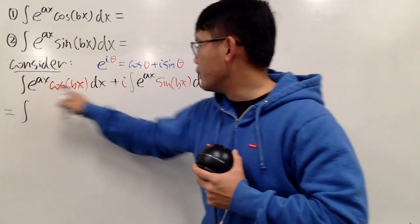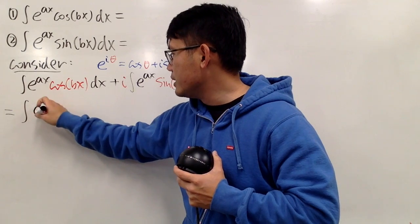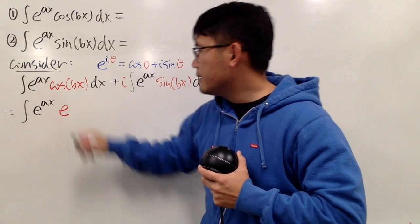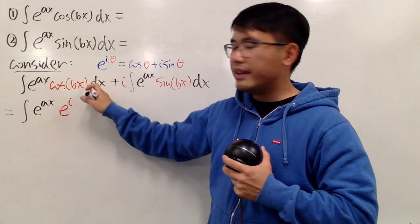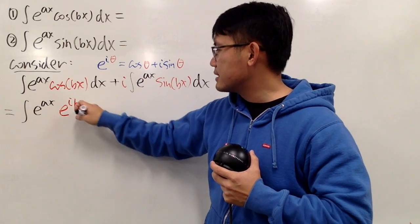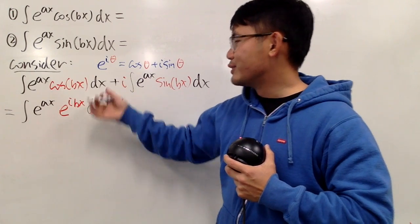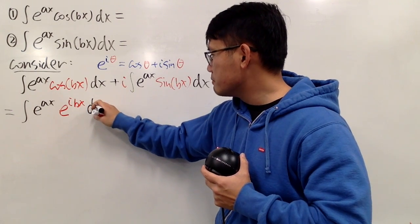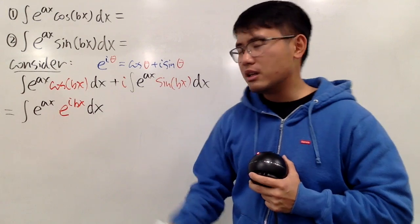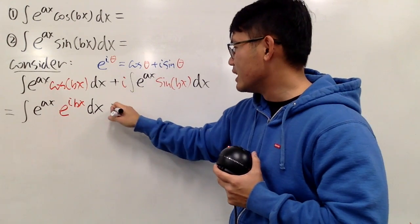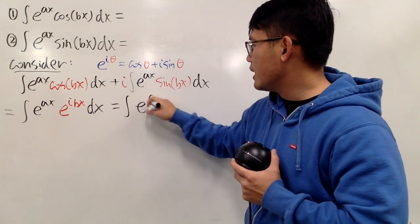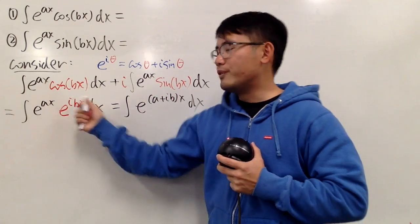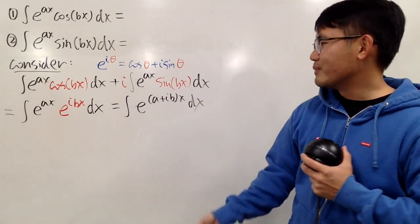Now we put these two integrals together. We have the integral, and we factor out e to the ax. When you combine cosine bx, i times sine bx, and e to the ax, since both have e as the base, we can just add the powers. So this becomes the integral of e to the (a plus ib) times x dx.